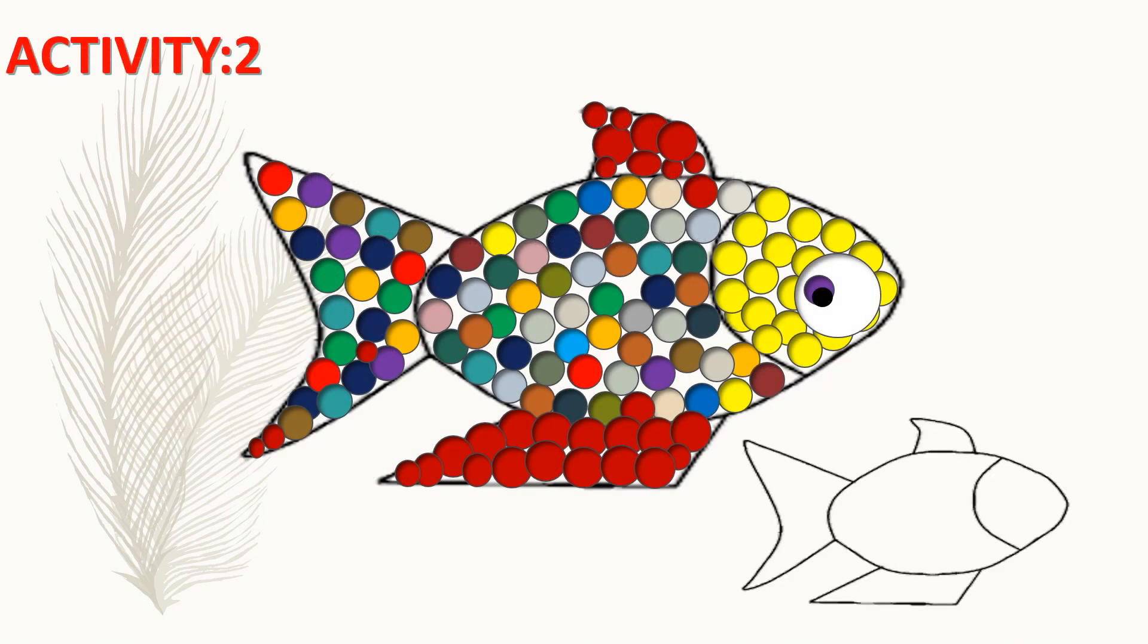Take an outline of the fish and take small pieces of paper. Cut circular shapes in different colors and stick them on top of the fish. The fish is made up of small pieces of circles.